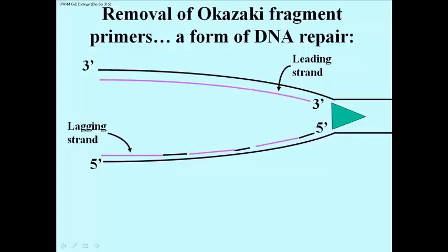After all, in the end, cells will be making two new and complete DNA molecules, not some DNA with bits of RNA in it. So here are the steps. They involve a special activity of DNA polymerase 1, the original enzyme of replication.